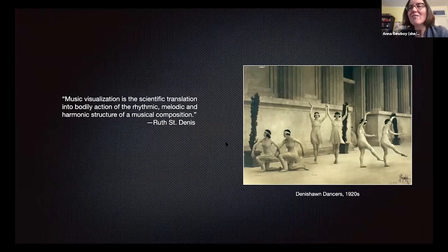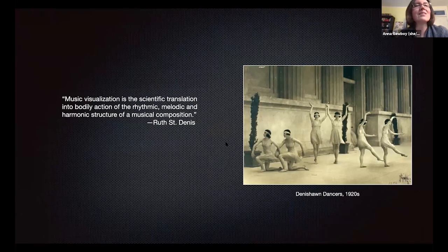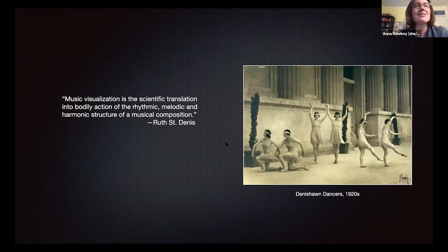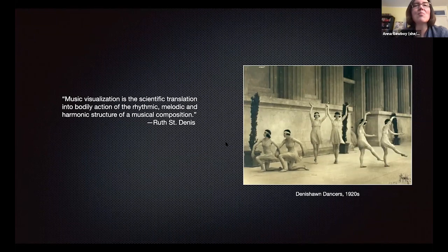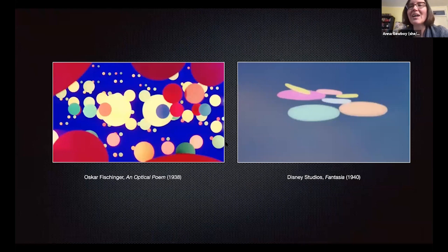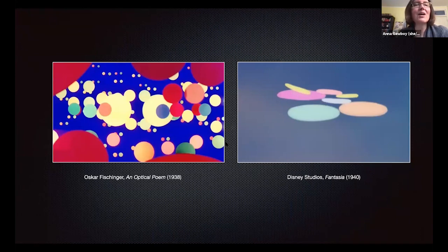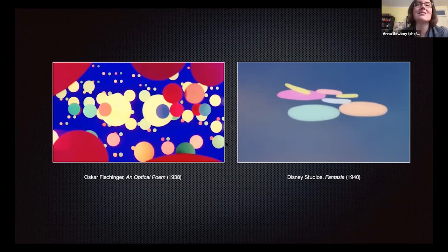In 1925, the choreographer Ruth St. Dennis defined music visualization as the scientific translation into bodily action of the rhythmic, melodic, and harmonic structure of a musical composition. She and her partner Ted Shawn developed a series of dances that attempted to reproduce each parameter of a musical texture precisely. The relatively new medium of film allowed other artists to mobilize musicalized imagery, and after 1929, pair it with a fixed audio track. Filmmakers such as Oscar Fischinger created films relying on close synchronization of music with abstract animation — a style popularized in Disney's Fantasia.